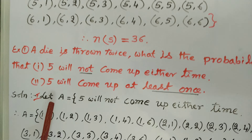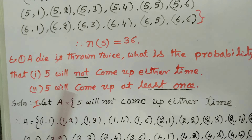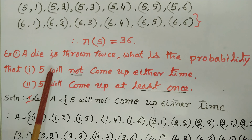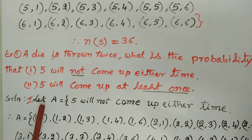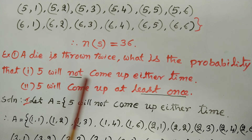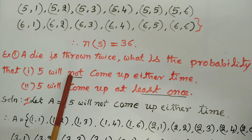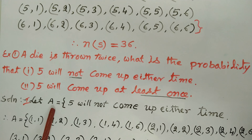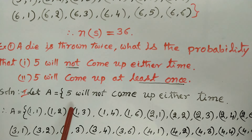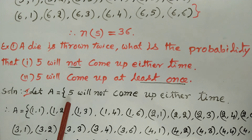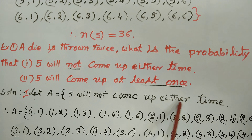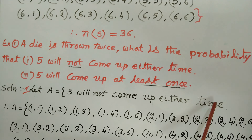We know that n(S) = 36. We have to calculate the first one. Let A be the event: five will not come up either time.